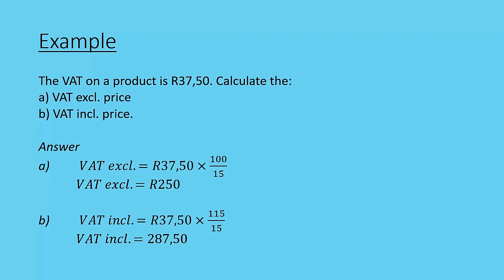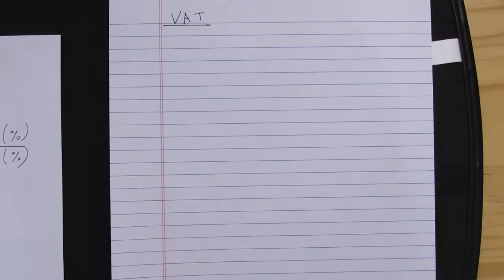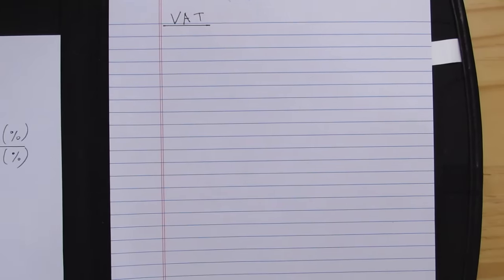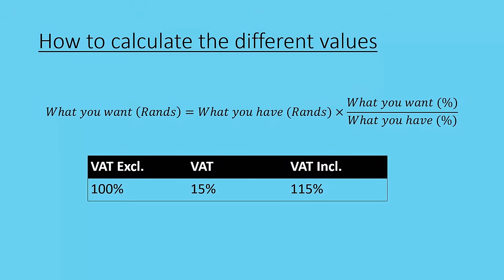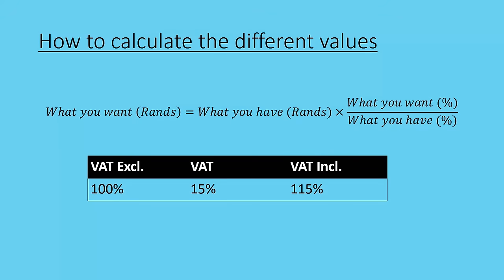Always think about that formula — it's probably the simplest way to look at it, and you get better at it if you practice a little more. The formula is: what I want in Rands equals what I have in Rands multiplied by what I want percentage-wise over what I have percentage-wise.